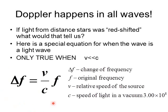For light, we use the redshift equation — an approximation given on your IB test in Option A of your yellow packet. It is: delta-F equals (v over c) times F, where delta-F is the change in frequency, v is the relative speed of the source, c is the speed of light in a vacuum (approximately 3.00 times 10 to the 8th m/s), and F is the original frequency.